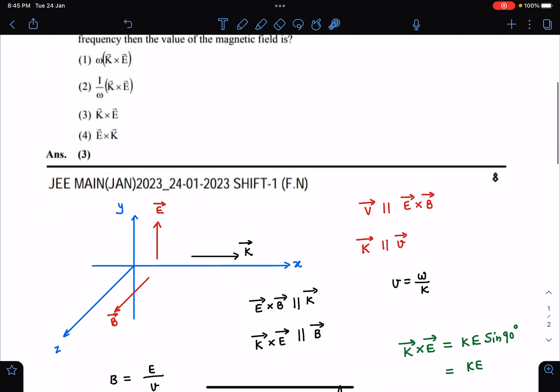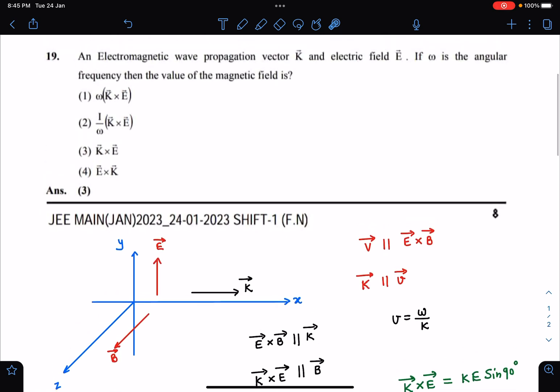Let's discuss this. Here it is given vector K and vector E. K is the propagation vector, so when we write a sine(ωt - kx), that k is given. ω is the angular frequency. Then the value of magnetic field is - we are taking a simple case where E is along y and B is along z.